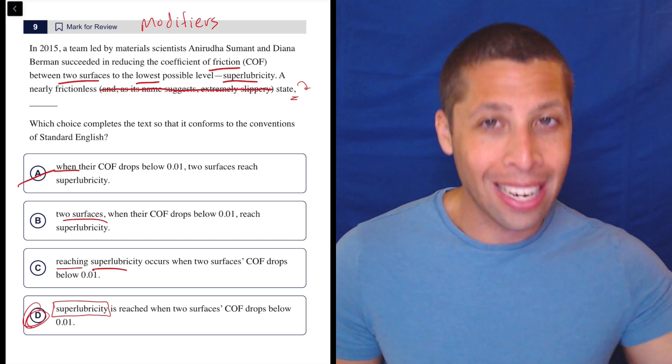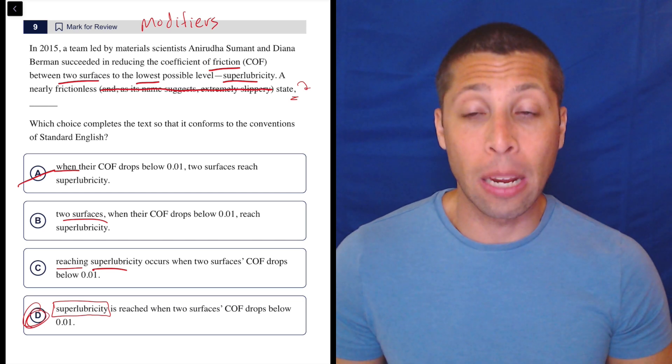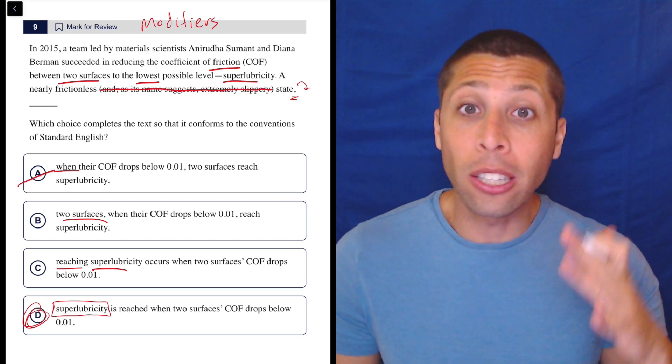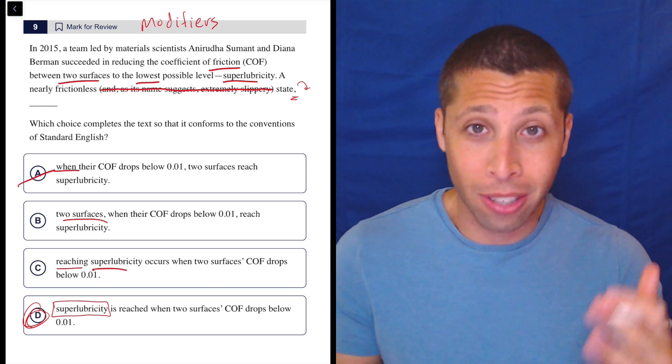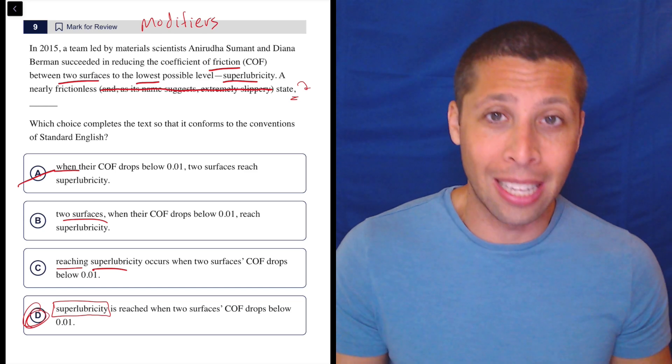As soon as I look at these answer choices, I know it's about modifiers. I know how to think about that. And so now I have a very clear task. And all these distracting science words don't distract me. They just kind of inform me what I'm looking for in the answer choice.